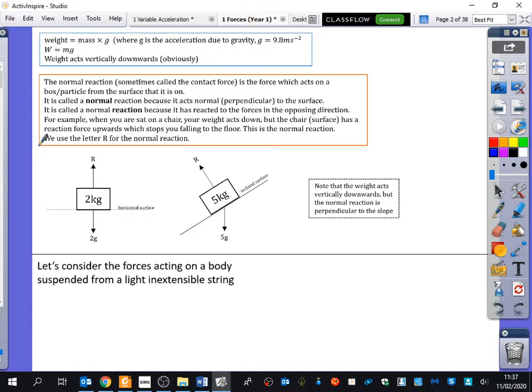And it's called a normal reaction because it has reacted to the forces in the opposing direction. Just like the feeling that you've got on your chair, the chair is reacting to your weight on the chair. That's why it's a normal reaction. So we use the letter R for the normal reaction most of the time. Sometimes when we go through to year 13 and we have multiple normal reactions, we may use the letter N as well.